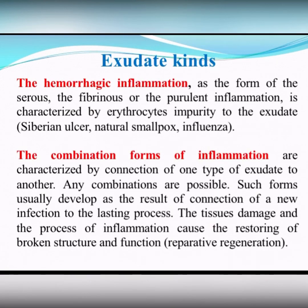The hemorrhagic inflammation, as a form of serous, fibrinous, or purulent inflammation, is characterized by erythrocyte admixture to the exudate. Sometimes, as a combination of different forms of inflammation, it is characterized by connection of one type of exudate to another — any combinations are possible.